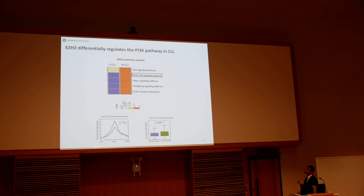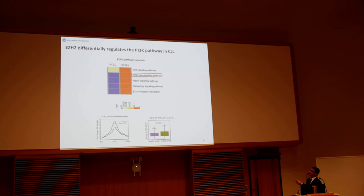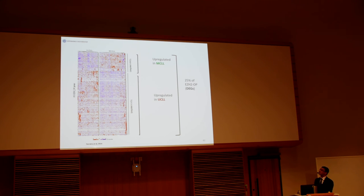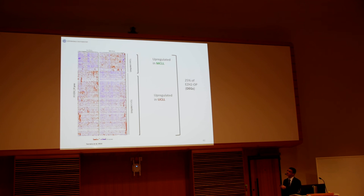These EZH2-overlapping genes were subject to pathway analysis. We came up with cancer-related pathways, and most interestingly, PI3K-AKT signaling, which was found to be differentially enriched for EZH2 between the two subgroups — more significantly enriched in unmutated CLL compared to mutated. We also performed RNA-seq analysis using a dataset published in 2014, and found that approximately 25% of these EZH2-overlapping genes were differentially expressed between the two subgroups. The majority of these genes were upregulated in CLL, suggesting an implication of EZH2 in active gene expression in a complex-independent manner, specifically in unmutated CLL.